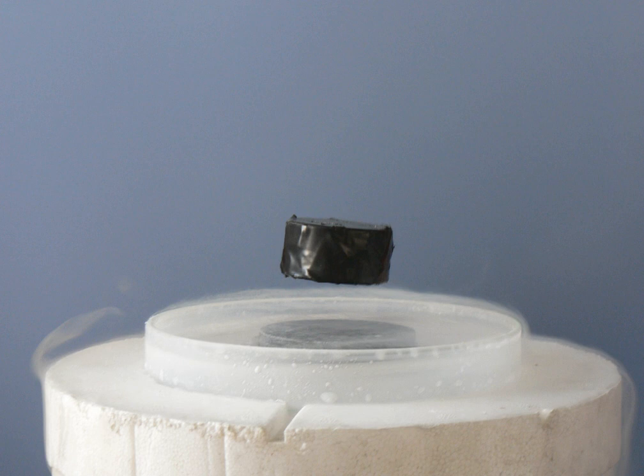Meissner effect: When a superconductor is placed in a weak external magnetic field H, and cooled below its transition temperature, the magnetic field is ejected. The Meissner effect does not cause the field to be completely ejected but instead the field penetrates the superconductor but only to a very small distance, characterized by a parameter lambda, called the London penetration depth, decaying exponentially to zero within the bulk of the material. The Meissner effect is a defining characteristic of superconductivity. For most superconductors, the London penetration depth is on the order of 100 nm.